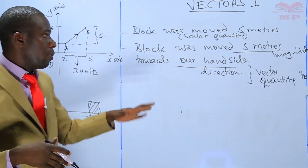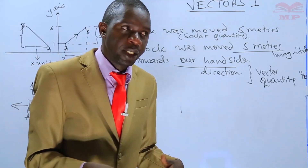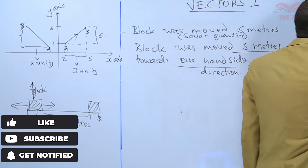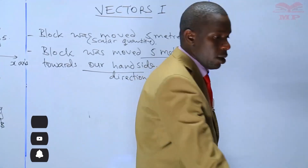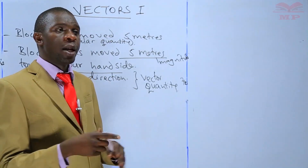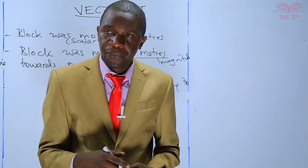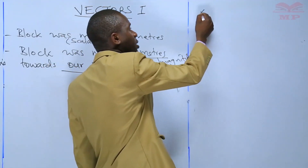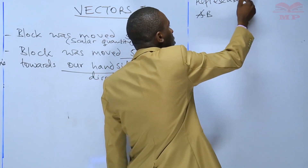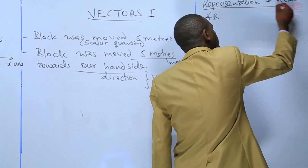Now I want us to move straight ahead and look at how we can represent vector quantities. To represent a vector quantity, you can use two capital letters or a single small letter. Let me illustrate this — here is a representation of vectors.